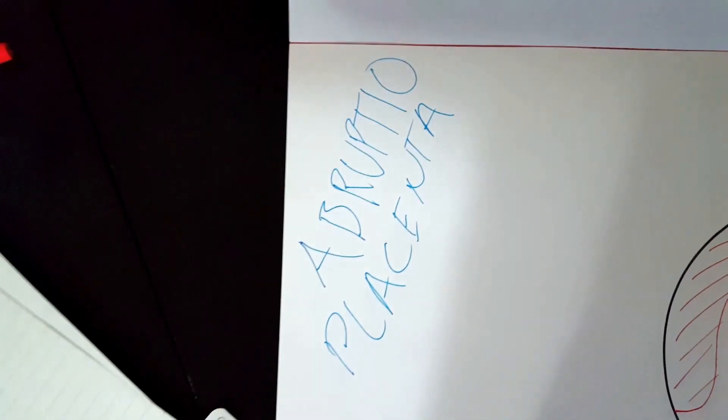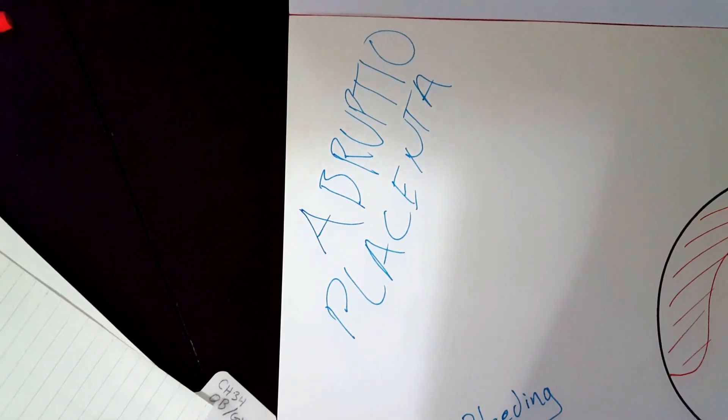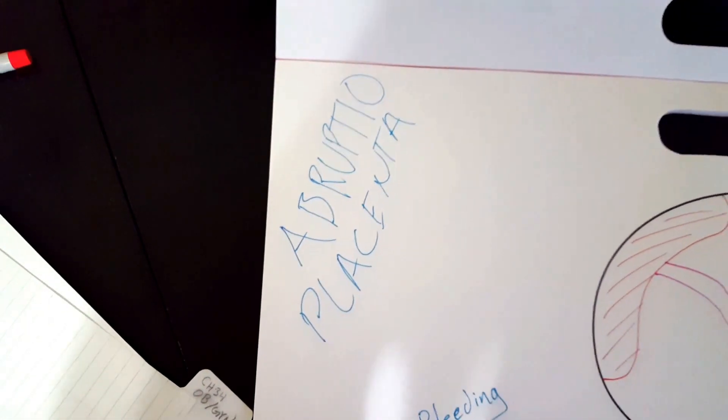Abruptoplacenta. What does that mean? That means that the placenta has separated from the uterine wall.